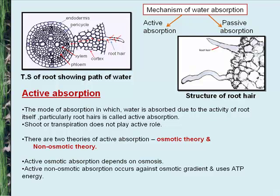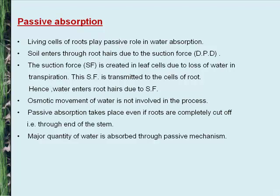Active non-osmotic absorption occurs against the osmotic gradient and uses ATP energy; this mechanism is not controlled by osmosis. Passive absorption involves no expenditure of metabolic energy. Living cells of the roots play a passive role; water enters through root hairs due to suction force (DPD), which is created in leaf cells due to loss of water in transpiration and transmitted to root cells. Passive absorption takes place even if roots are completely cut off. The major quantity of water is absorbed through the passive mechanism.